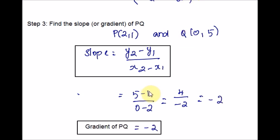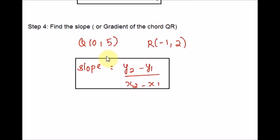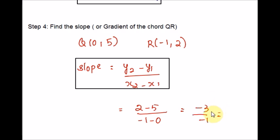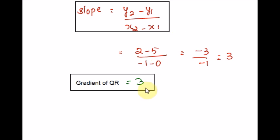Hope you are clear with step 3. We are going to follow the same formula for step 4 to find the slope of the other chord QR. Plugging the XY coordinates into the formula: 2 minus 5 over negative 1 minus 0. Negative over negative is positive, so 3 over 1 is 3. So far we have found the gradients of both chords and the midpoints of the chords.